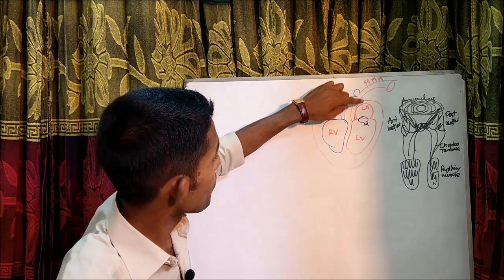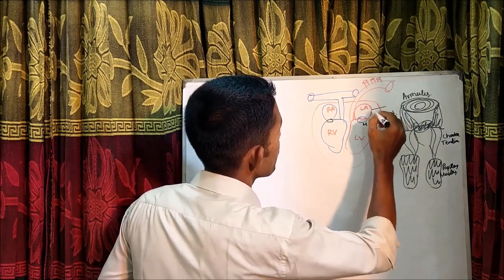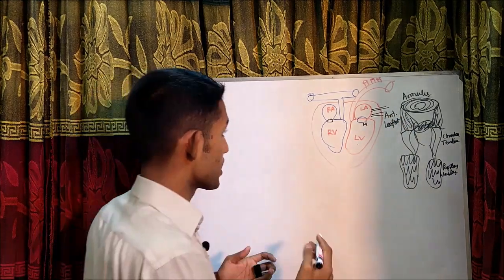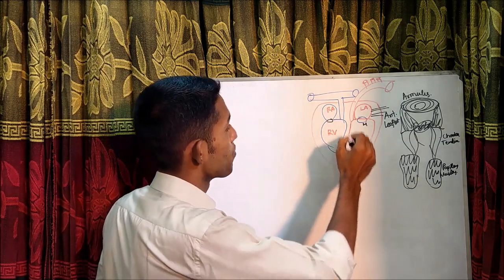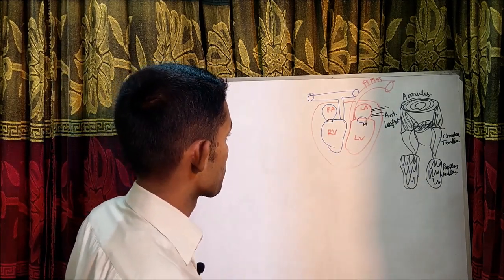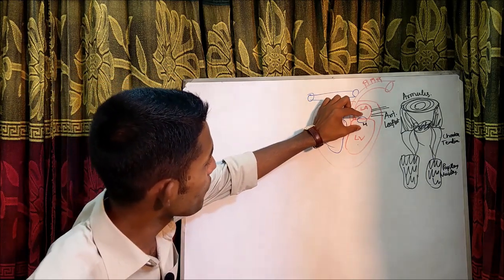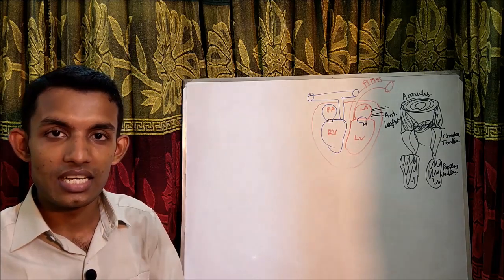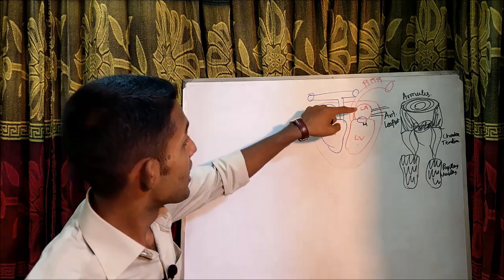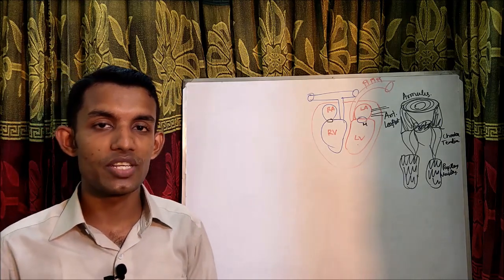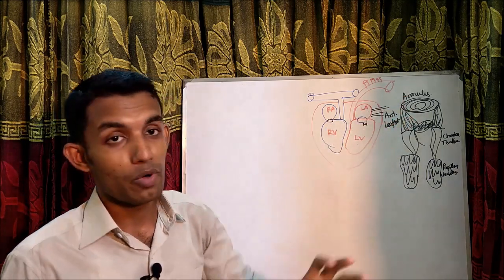As there is obstruction from the left atrium to the left ventricle, left atrial pressure rises. This gradual increase causes pulmonary venous congestion, left atrial dilatation, and left atrial hypertrophy. Left ventricular filling becomes more dependent on left atrial contraction. Any increase in heart rate shortens diastole, reducing the time the mitral valve remains open — so exercise and pregnancy are poorly tolerated in mitral stenosis.